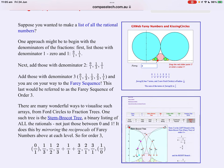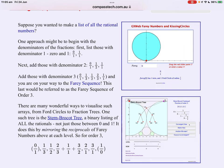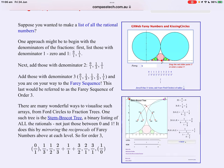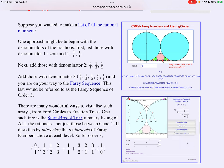And here we go to another common historically important mathematical question. Suppose we wanted to make a list of all the fractions or in fact all of the rational numbers? Well one approach might be to begin with the denominators of the fractions so first list those with denominator one, that would be zero and one as shown here.